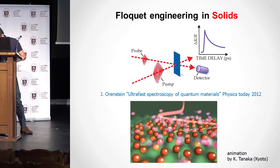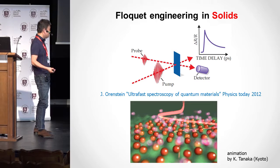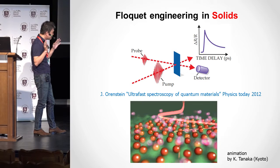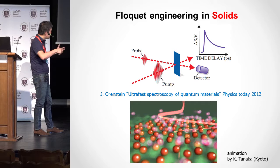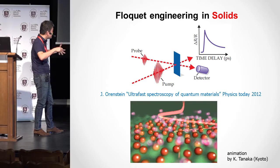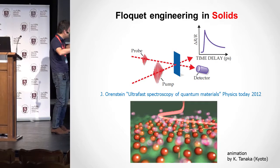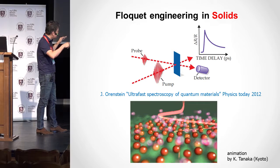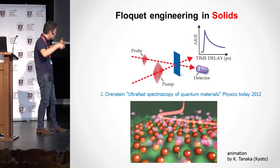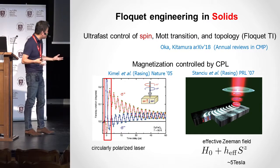My background is actually solid state physics, not cold atoms. In solid state physics, the idea of Floquet engineering is becoming very popular. The big difference is that in solids, we already have a lattice with electrons. To do Floquet engineering, we need shaking, which is done in an ultrafast manner in a pump-probe setup. You shine a very intense, coherent laser — the pump — which excites the material, shakes the phonons, and drives the electrons in a quantum coherent way. Then you shine a second probe laser and take a snapshot of the time-dependent change of the quantum state.